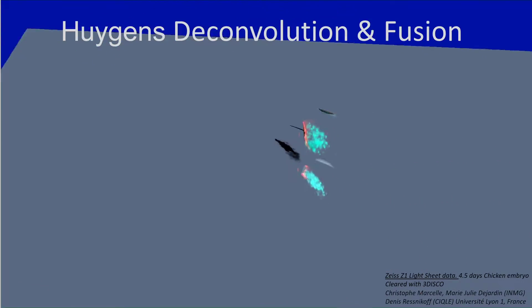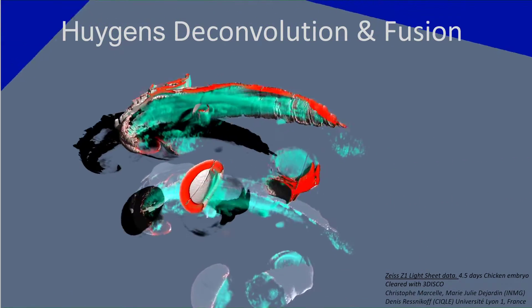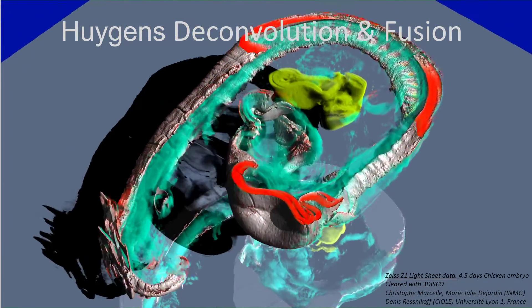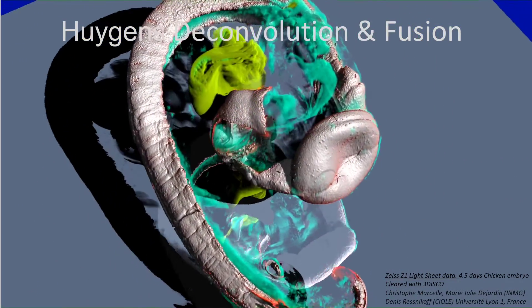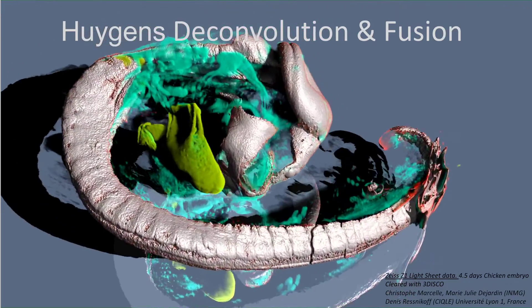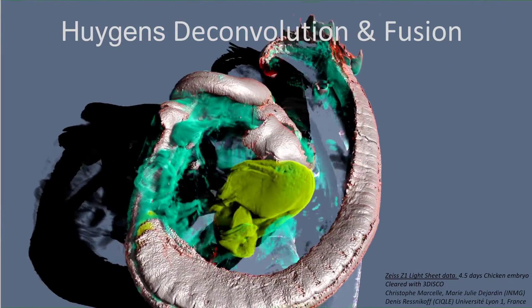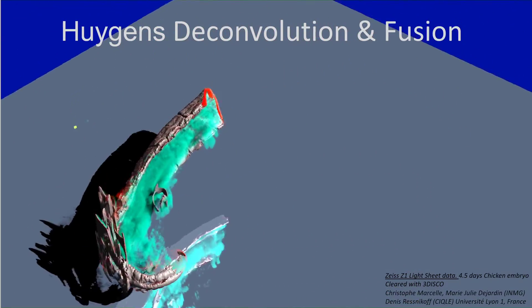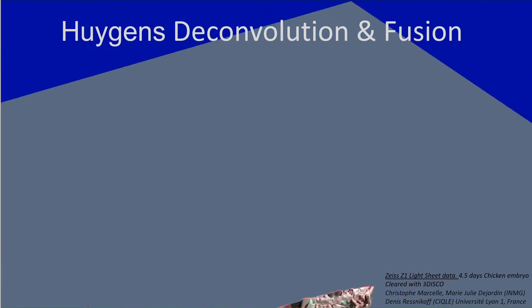Welcome everyone. This talk is about lightsheet deconvolution and fusion using SVI's Huygens software. This movie shows a chicken embryo where 12 tiled and rotated fuse were stitched and fused together using Huygens.